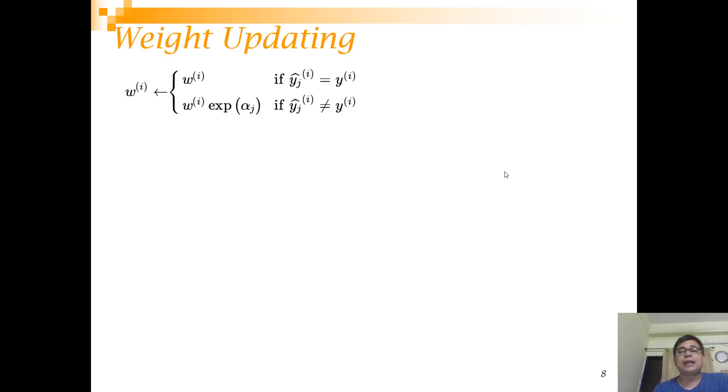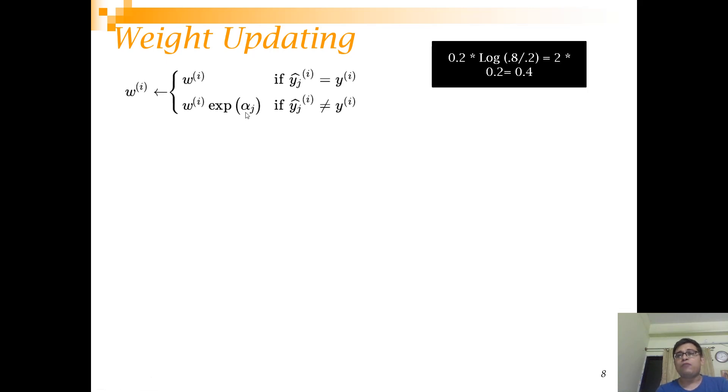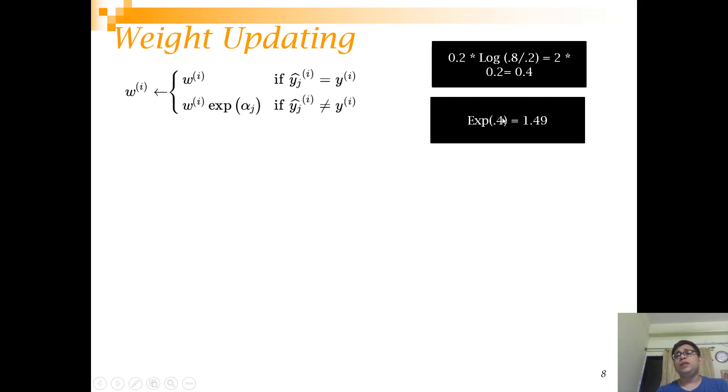Now let's see how the weight is updated. This is the alpha that we calculated. If you remember, the value of alpha we got earlier was 0.4. What it says is that the weights will not change where it correctly classified. However, where it misclassified, the weight will be increased by this factor. So this comes to 1.49 - exponential of 0.4.